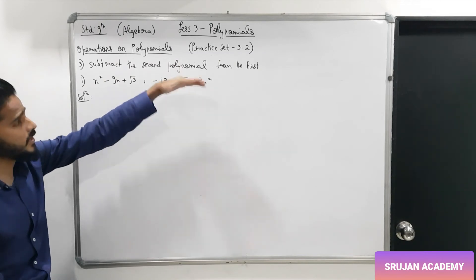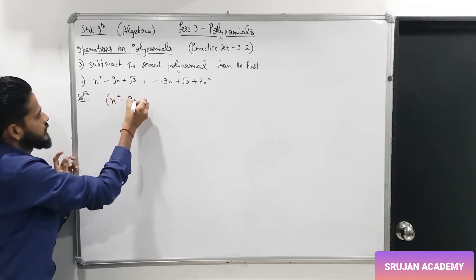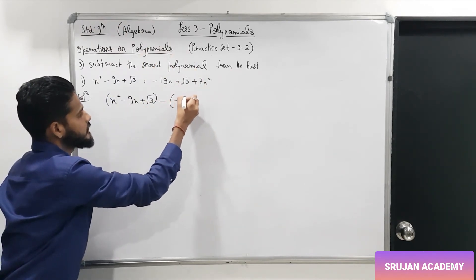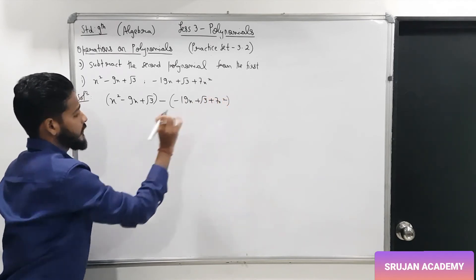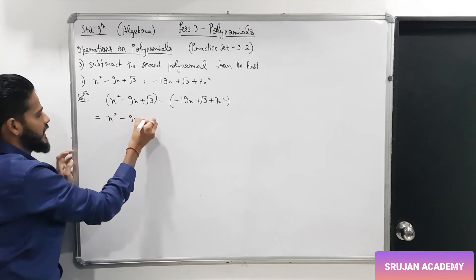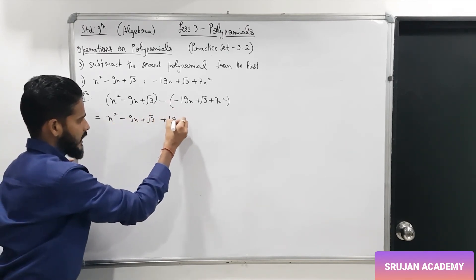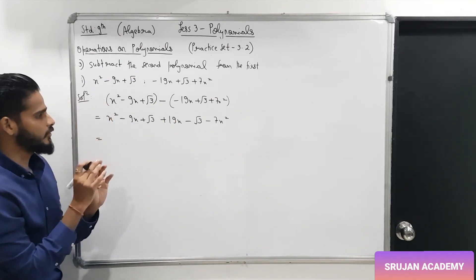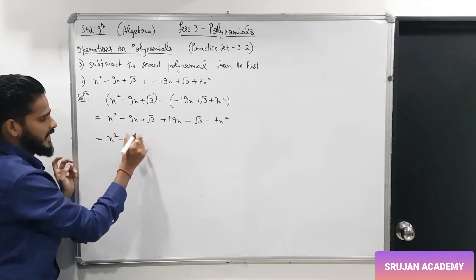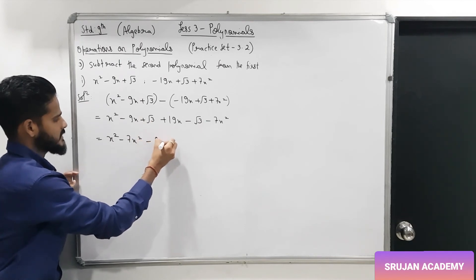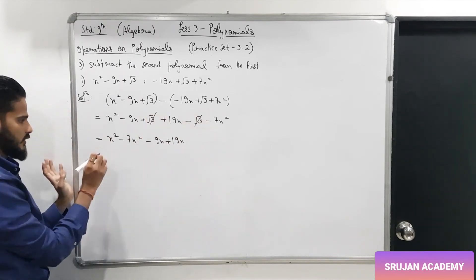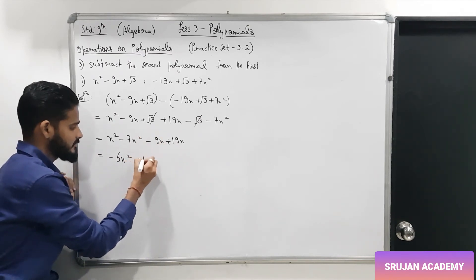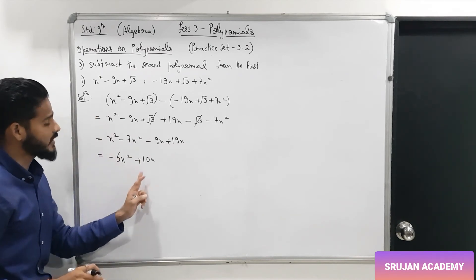Question 3: subtract the second polynomial from the first. Write the first polynomial first, then minus the second polynomial in brackets. Opening the brackets and distributing the minus sign: (x² − 9x + √3) − (7x² − 19x + √3). This gives x² − 9x + √3 − 7x² + 19x − √3. Combining like terms: x² − 7x² = −6x², −9x + 19x = +10x, and √3 − √3 = 0. Final answer: −6x² + 10x.